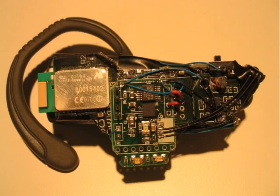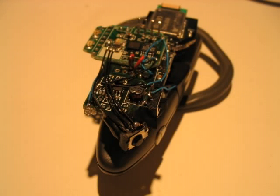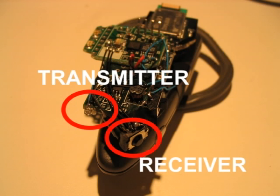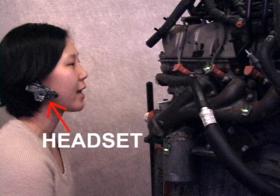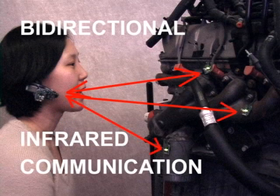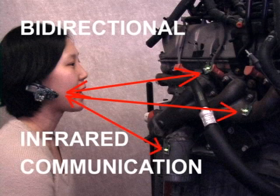A specially modified audio headset allows the system to give auditory feedback and informational content to the user. The headset is outfitted with the same infrared transceiver as the objects in the environment. These communication components are oriented in the direction of the user's gaze, allowing the headset to communicate bi-directionally with augmented items that are within the visual field of the user.